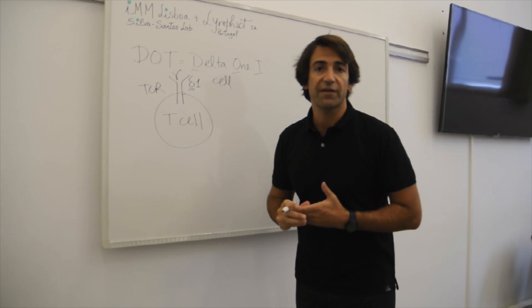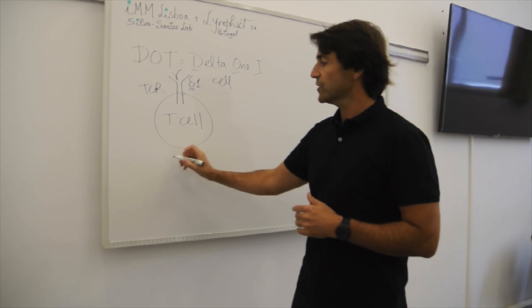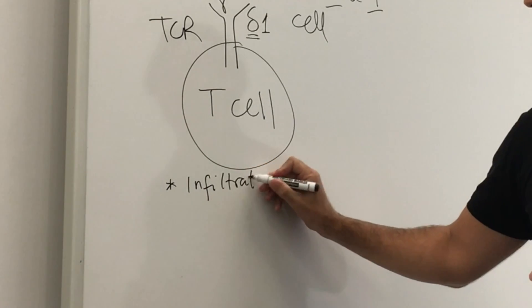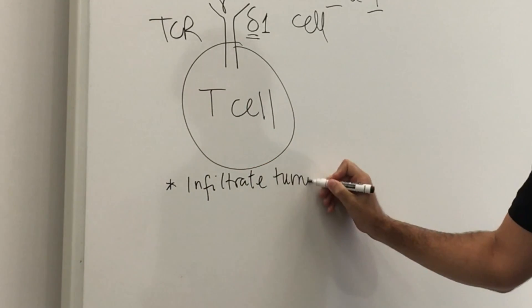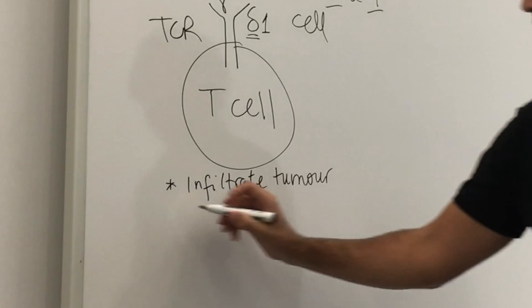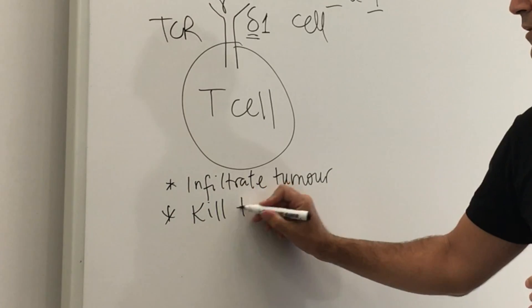Now these cells we think are very important and very interesting candidates for cancer immunotherapy because of three characteristics. They are very prone to infiltrate tumors, so they go inside the tumor where they can exert their anti-tumor effector functions. And these are to kill tumors, so they are able to kill tumor cells.